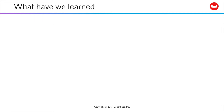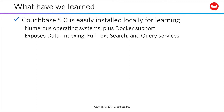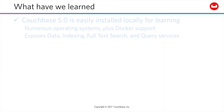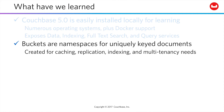So what have we learned here? First, Couchbase 5 is easily installed locally for learning purposes, supported by numerous operating systems, and you can also use Docker if you'd rather wrap it in a container. Couchbase supports data, indexing, full-text search, and query services. Buckets are namespaces for uniquely keyed documents. You create a new bucket if you have different caching, replication, indexing, or multi-tenancy needs. They are a uniquely keyed key space, but they don't exactly map to the notion of a database.